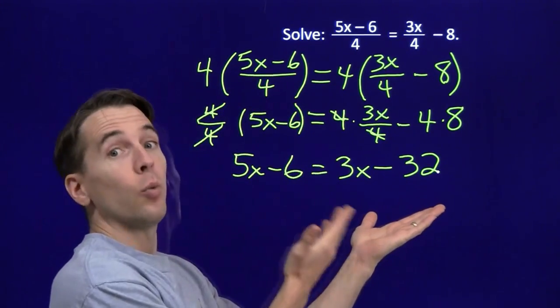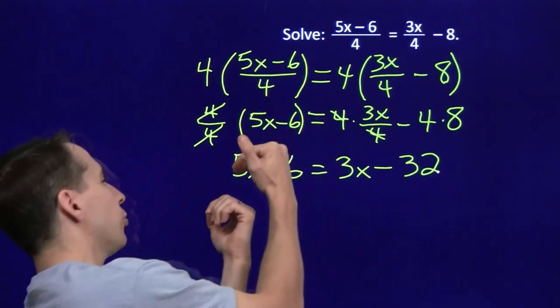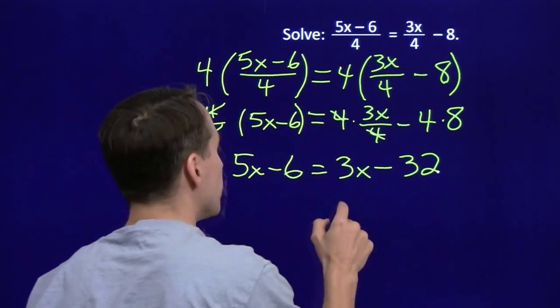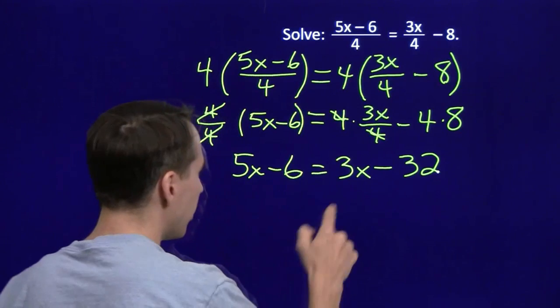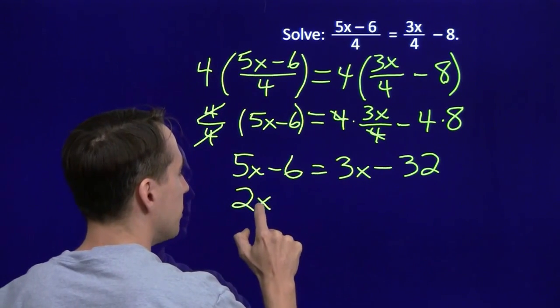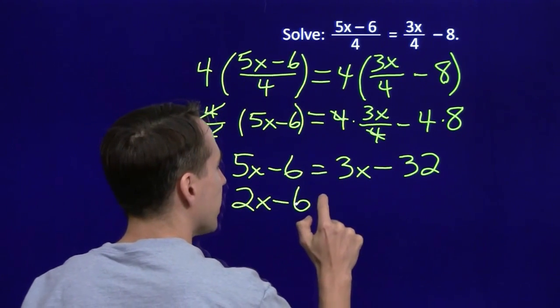And now we have an equation we know how to handle. We get all the variables on one side, all the constant terms on the other. So we're going to subtract 3x from both sides. That'll knock it out over there. That'll leave us 2x over here. 5x minus 3x is 2x.